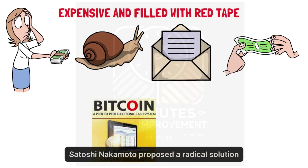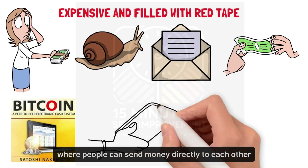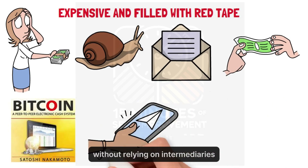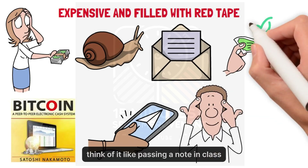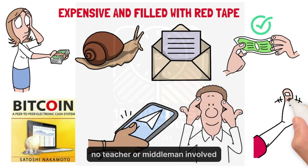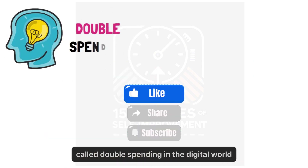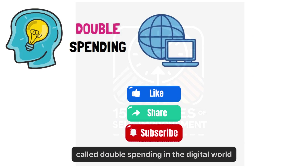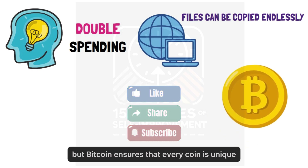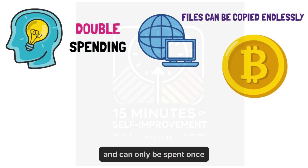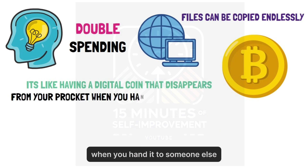Satoshi Nakamoto proposed a radical solution: a peer-to-peer system where people can send money directly to each other without relying on intermediaries. Think of it like passing a note in class — no teacher or middleman involved. This idea solves a critical problem called double spending. In the digital world, files can be copied endlessly, but Bitcoin ensures that every coin is unique and can only be spent once. It's like having a digital coin that disappears from your pocket when you hand it to someone else.